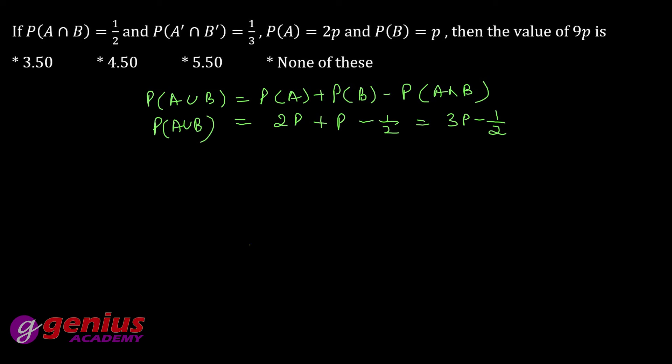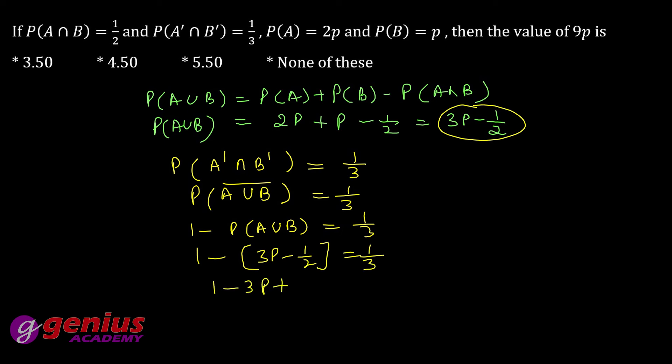Ab next diya hai aapko p of a naught intersection b naught equal to one by three given hai. Probability of a union b naught. Or probability of a union b naught kya hota, one minus probability of a union b one by three. Maine nikala hai 3 minus p minus half equal to one by three. That means one minus 3p plus half equal to one by three. This and this solve, how much is it? Three by two.